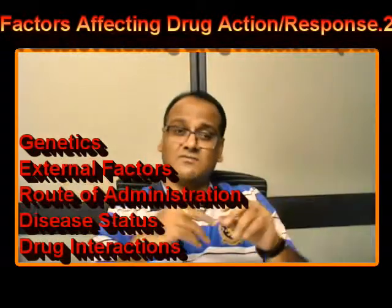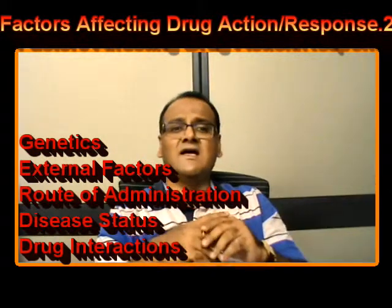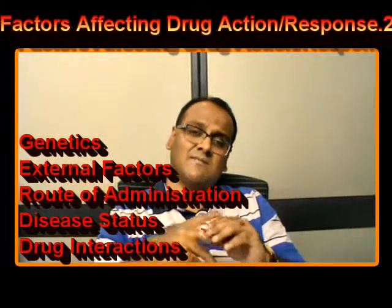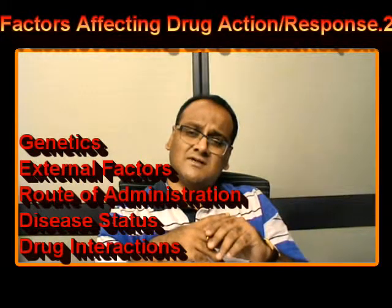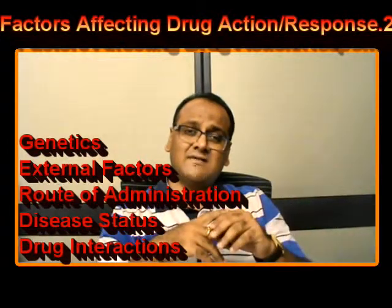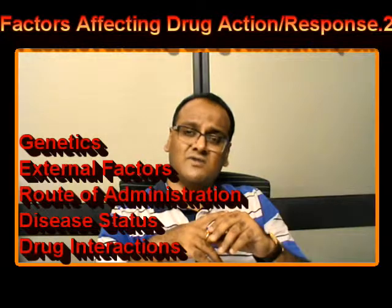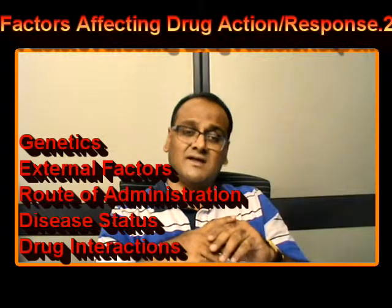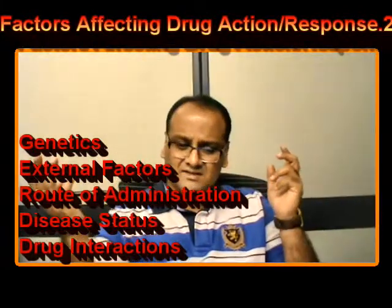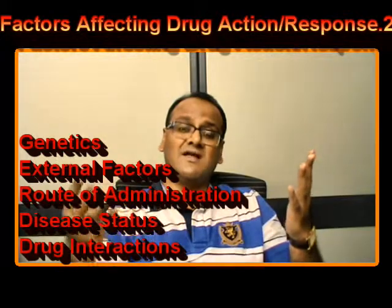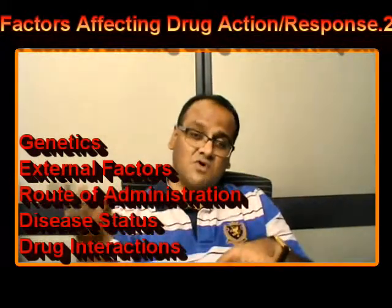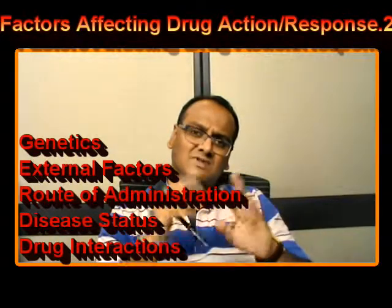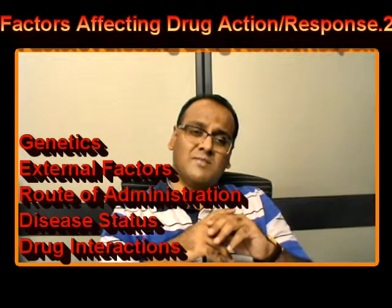The next factor is route of administration. If you administer a drug in a particular way it has a particular action; changing the route changes the action and uses. For example, magnesium salts taken orally act as antacids, but administered by parenteral route they cause CNS depression. Applied topically, magnesium salts can reduce edema of a wound. So route of administration ultimately decides how drugs will act and what response we get.